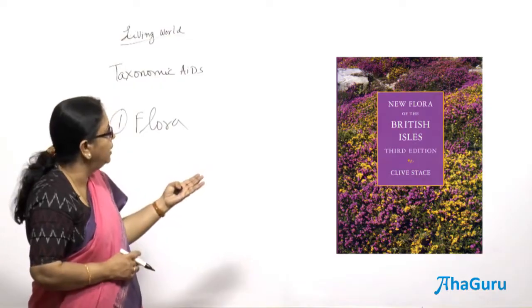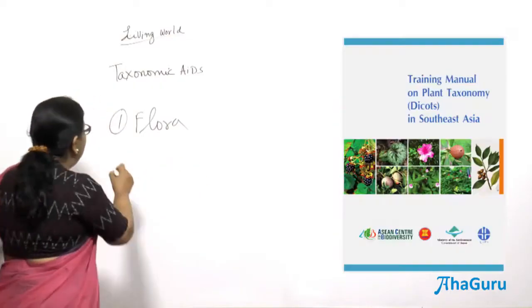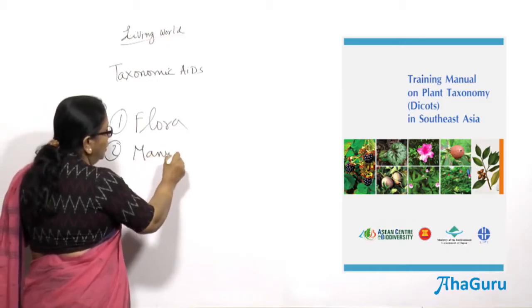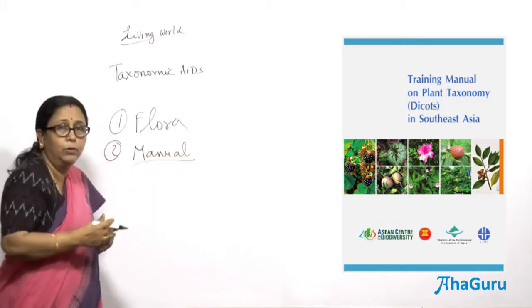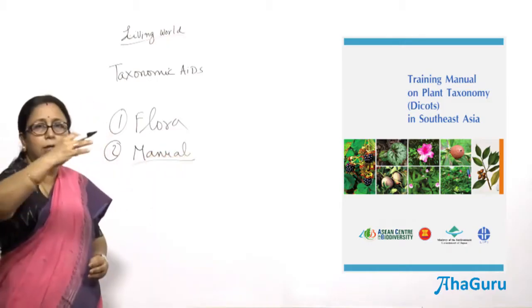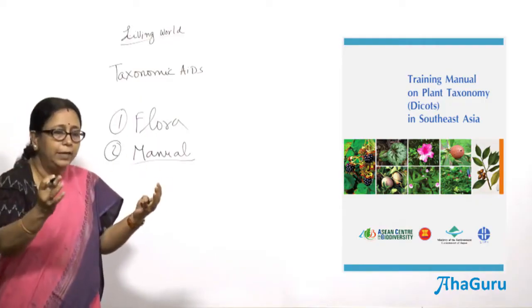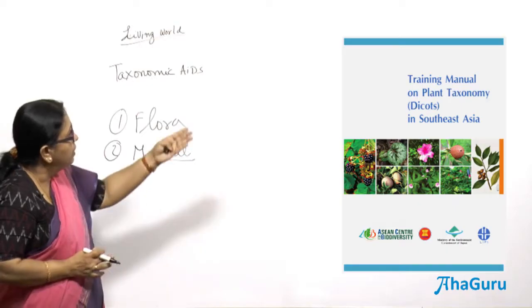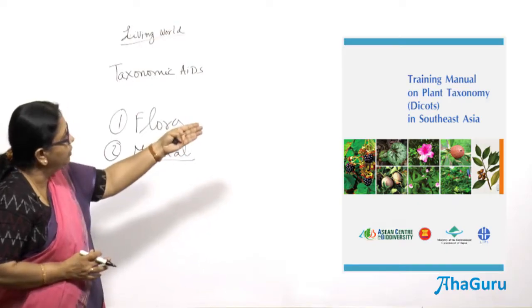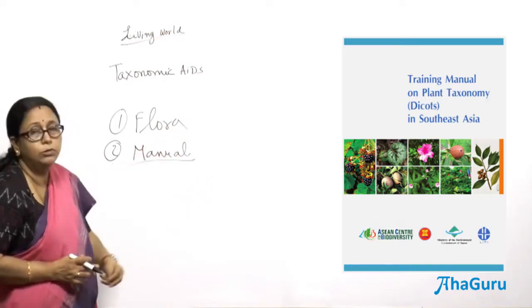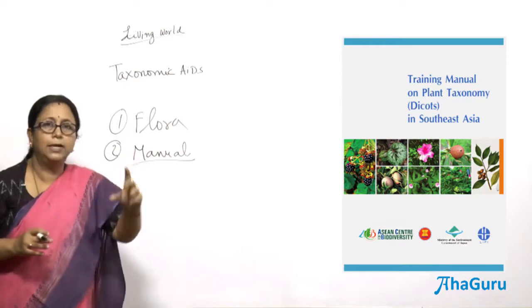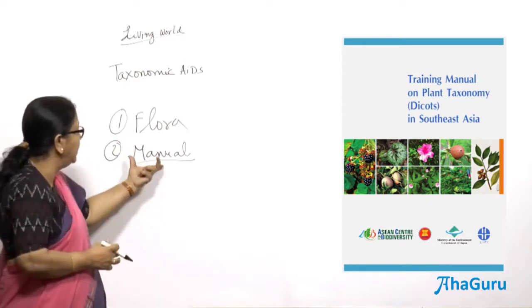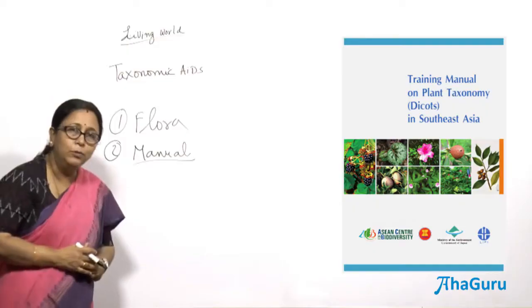Apart from flora, there is one more called manuals. Manuals describe in detail all the plants living in a particular area. For example, a manual for the dicots of South East Asia would describe all the dicots in detail — their characteristics and all those things.